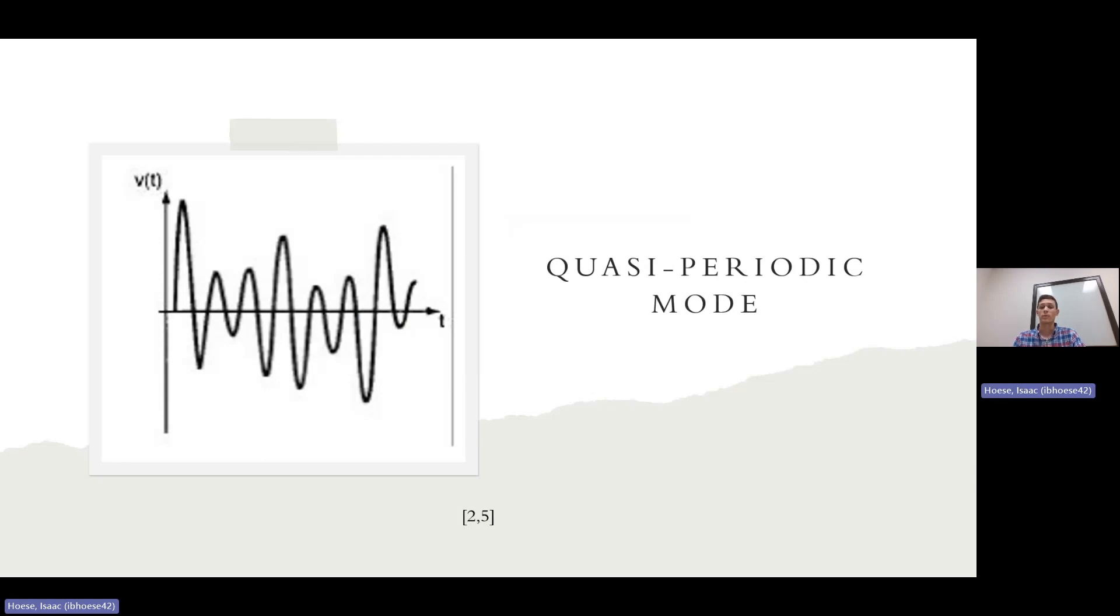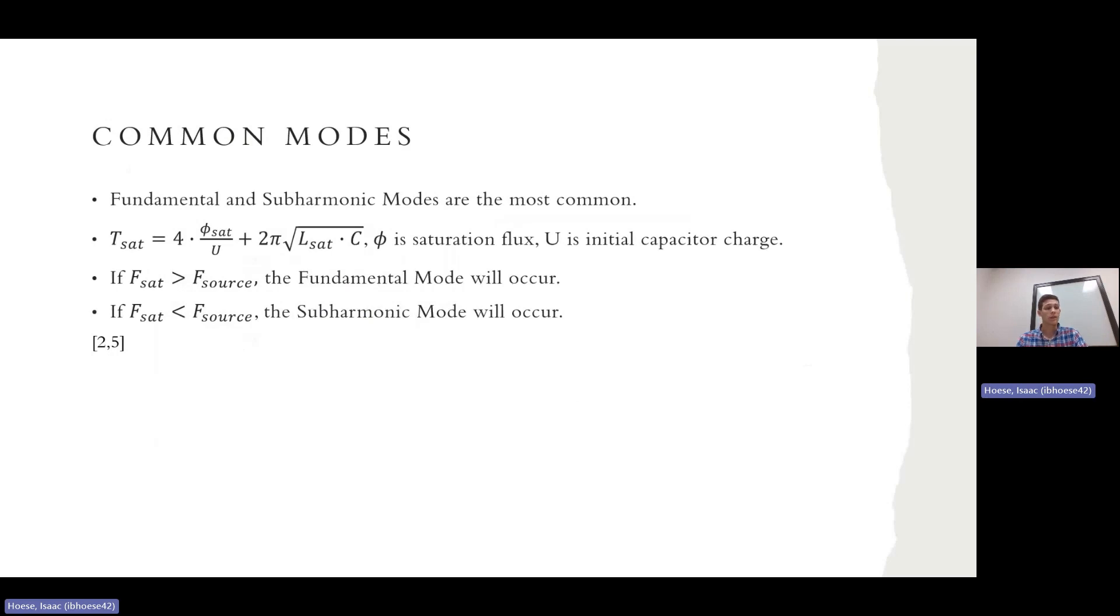The last one we have here is the quasi-periodic mode. And it has an incoherence looking at the frequency spectrum. And what I mean by that is the frequencies jump around. And in the subharmonic, they were, all the harmonics came every division of the fundamental frequency. With this one, there is no certain number. And studies have found that the quasi-periodic modes were possible in voltage transformers at a reasonable scenario. So they are possible, but not common. And that's where we see here the fundamental and subharmonic modes are the most common.